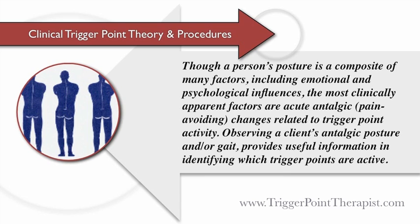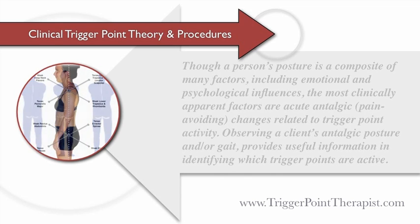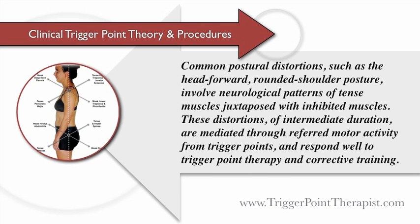Though a person's posture is a composite of many factors, including emotional and psychological influences, the most clinically apparent factors are acute antalgic or pain-avoiding changes related to trigger point activity. Observing a client's antalgic posture and/or gait provides useful information in identifying which trigger points are active. Common postural distortions, such as the head-forward rounded shoulder posture, involve neurological patterns of tense muscles juxtaposed with inhibited muscles. These distortions of intermediate duration are mediated through referred motor activity from trigger points and respond well to trigger point therapy and corrective training.